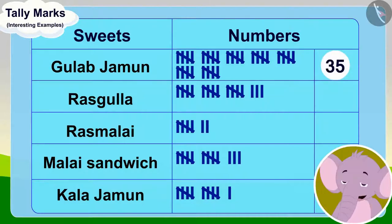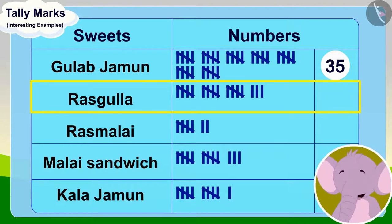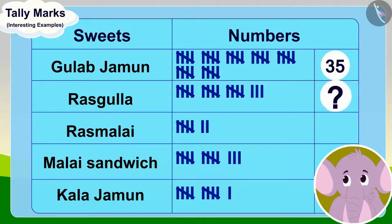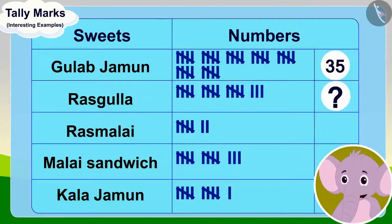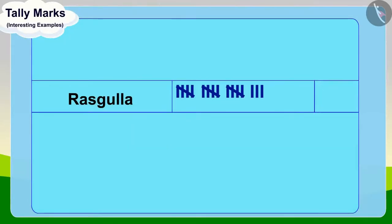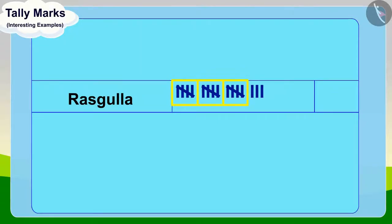Now, Appu wanted to find the number of another sweet. Here, some tally marks are not in a group of five. Then, how do I find the total number? Children, can you help Appu? Come, let us first count the groups of five tally marks. How many groups of five tally marks are there? Exactly three.